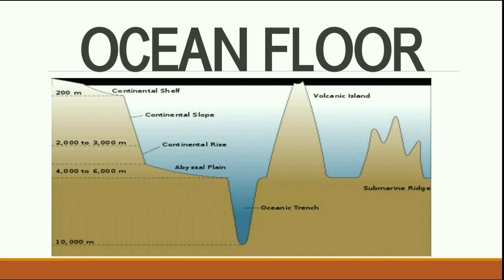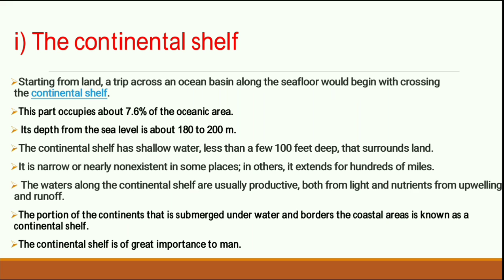This figure shows the ocean floor. First is the continental shelf, immediately after the coastline. Then there is a slanting steep line — that is the continental slope. After that is the abyssal plain, which extends from 4,000 to 6,000 meters and is a totally flat surface. Within the abyssal plain there is a deep oceanic trench, and you can also see a volcanic island where a mountain on the ocean floor rises above the water level, and ridges — which are underwater mountains.